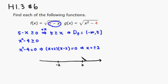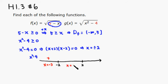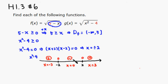Now look at the sign of x squared minus 4. Try a sample number less than negative 2, like negative 3: negative 3 squared is 9 minus 4, which is positive. Between negative 2 and 2, try 0: 0 squared minus 4 is negative 4, which is negative. For anything bigger than 2, try 3: 3 squared minus 4 is positive. So we want positive or zero, meaning x is less than or equal to negative 2 and greater than or equal to positive 2.